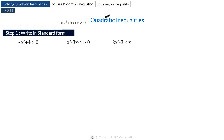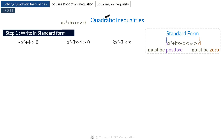Our first job is to make sure that the given inequality resembles the standard form of a quadratic expression. A quadratic inequality in standard form has two features: the coefficient of x squared is positive and the right-hand side of the inequality is 0. Looking at the examples, only the second example is in standard form. Minus x squared plus 4 greater than 0 is not in standard form because the coefficient of x squared is negative.